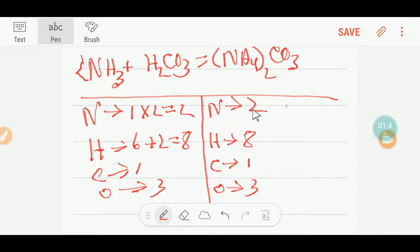We have one carbon, one carbon, so carbon is balanced. We have three oxygen, three oxygen, so oxygen is balanced. So this equation is balanced now. Thank you for viewing this video. Be well.